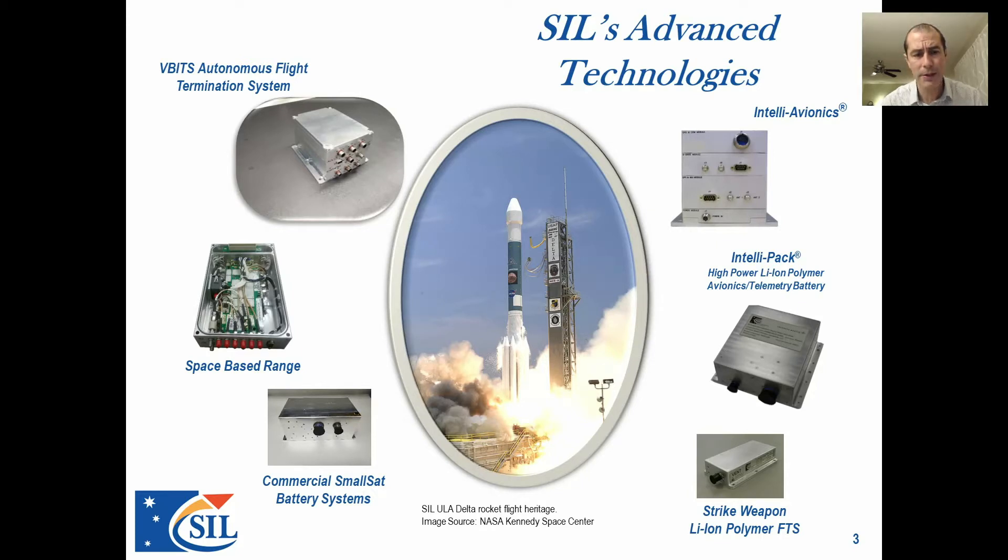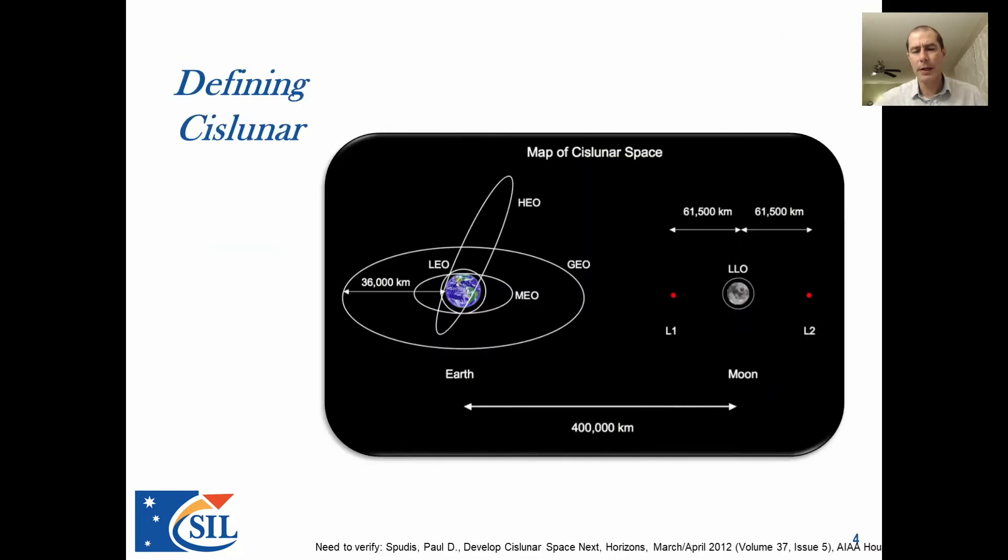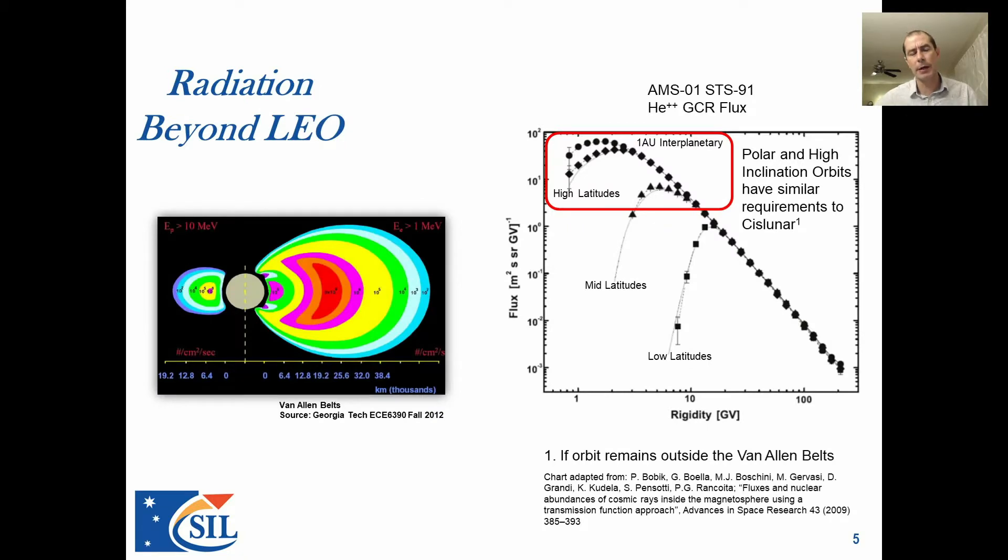A brief overview of our various types of technology. We have vehicle-borne autonomous flight termination systems, intelligent avionics, intelligent power packs, commercial battery systems, and space-based range systems. We've got some flight heritage on Delta rockets and several other platforms.